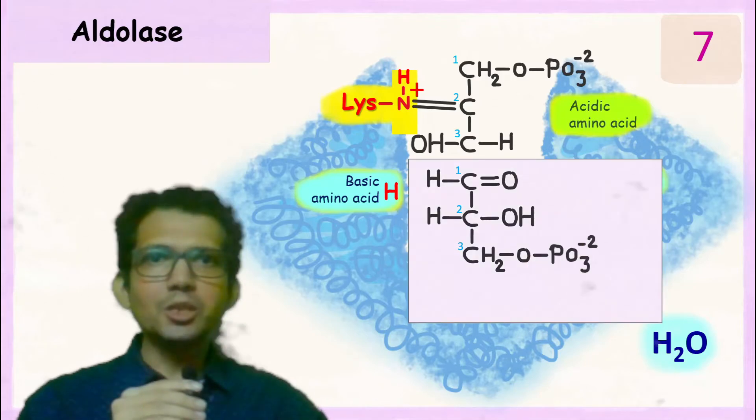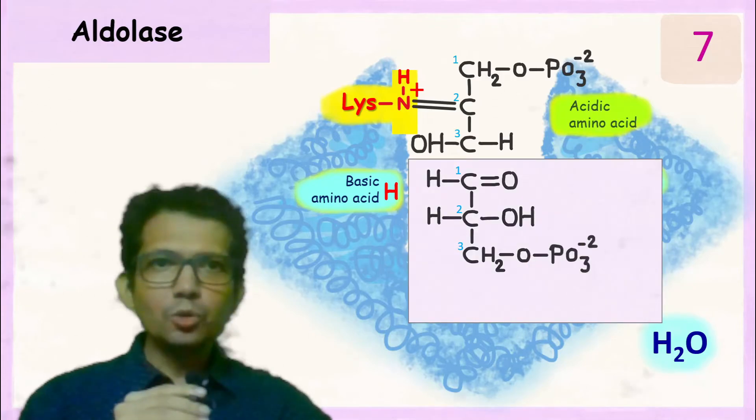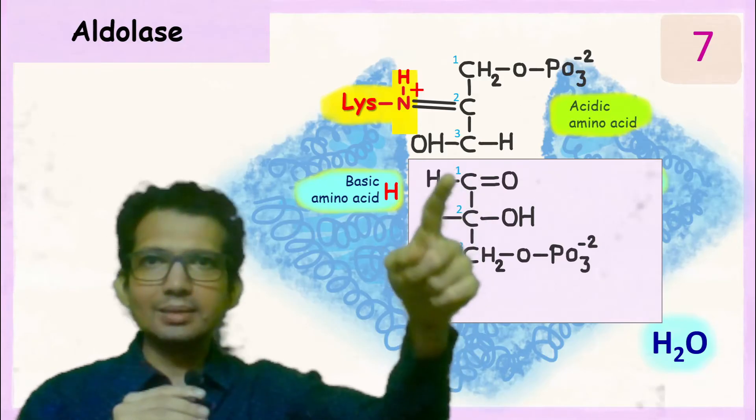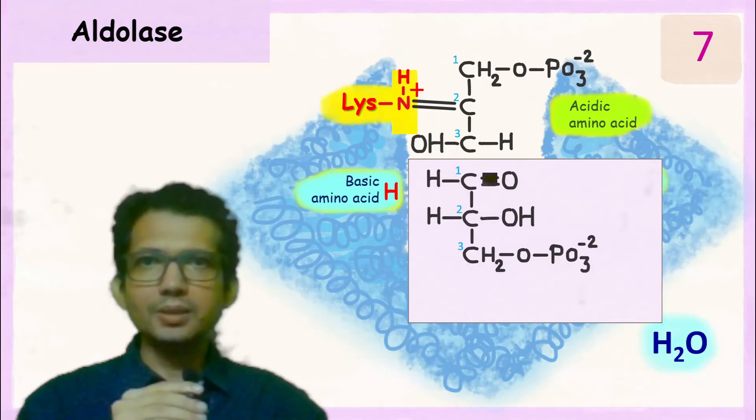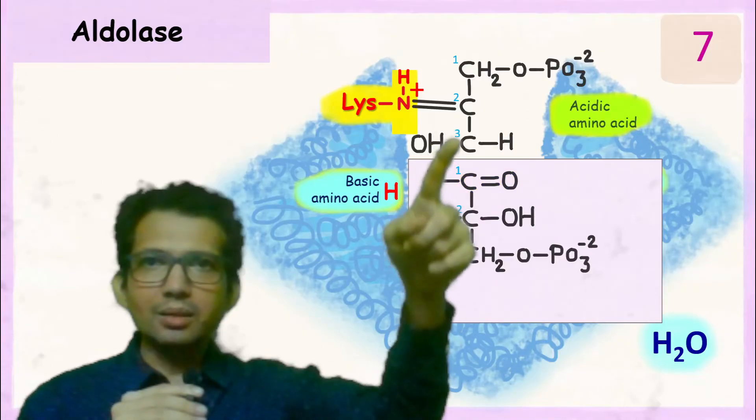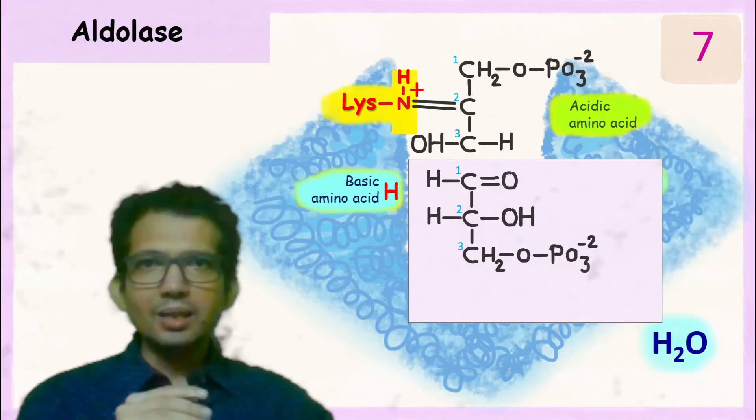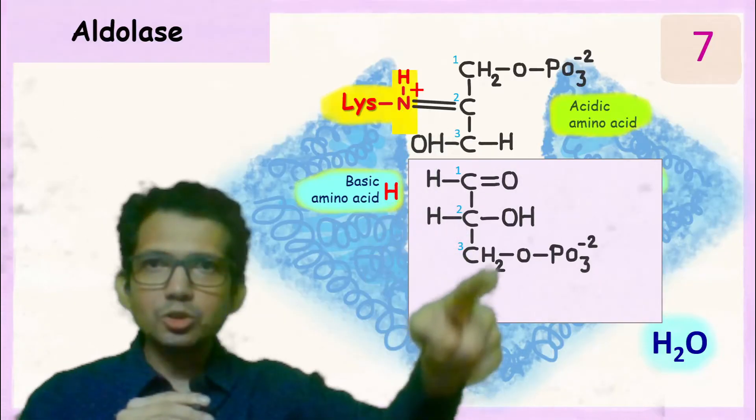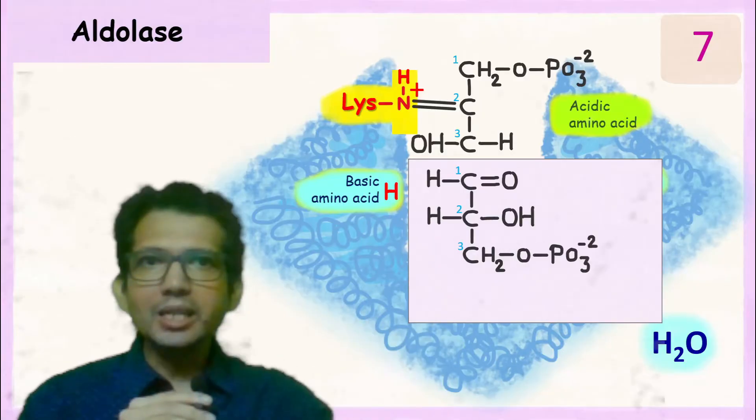Now pay attention to this product. This group over here is the aldehyde group. Since we have 3 carbon atoms, this is a basic structure of glyceraldehyde.